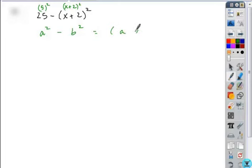You recognize that factors into the sum and difference of those bases. What you could do is substitute the 5 in for the a and the whole binomial x plus 2 in for each of the b's.